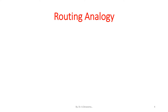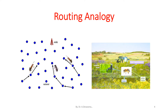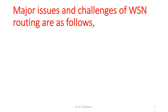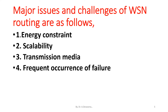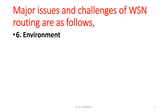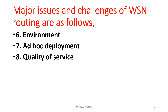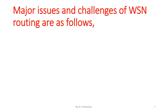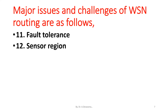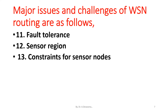Routing analogy is easily understood with the help of insects — ants and honeybee. The energy issues and challenges of wireless sensor network routing are as follows: energy constraint, scalability, transmission media, frequent occurrence of failure, hardware constraint, environment, ad hoc deployment, quality of service, topology maintenance, power constraints, fault tolerance, sensor region, constraints for sensor nodes, and communication failure.